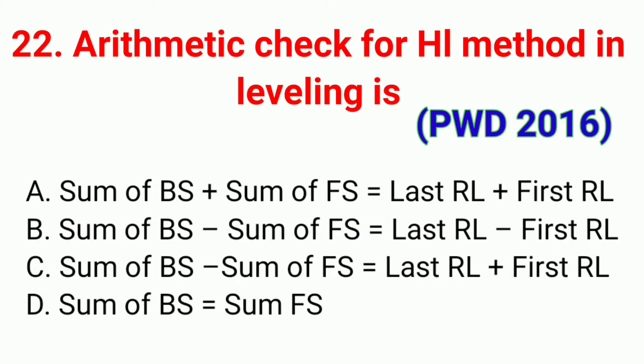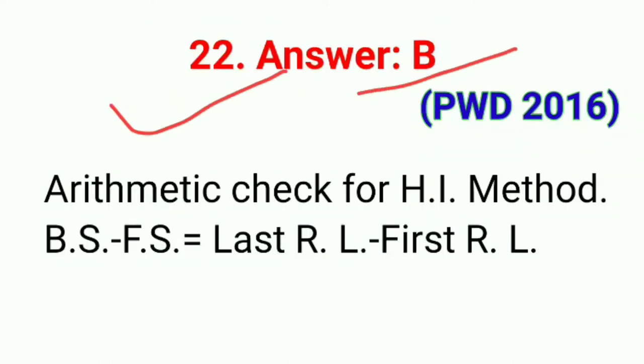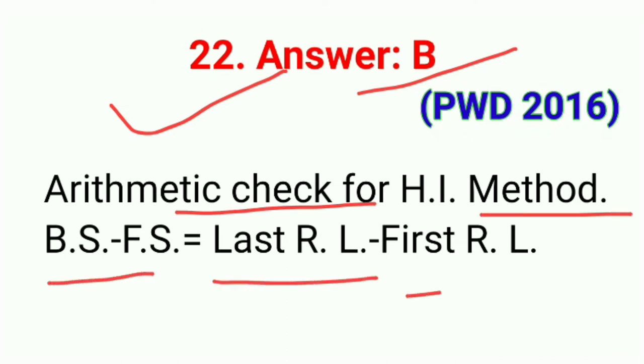Question number twenty-two: The arithmetic check for the Height of Instrument (HI) method in leveling is. The correct answer is option B: Sum of BS minus sum of FS equals last reduced level minus first reduced level.